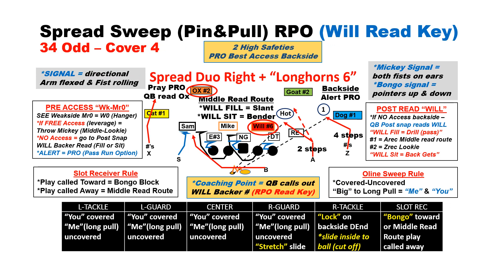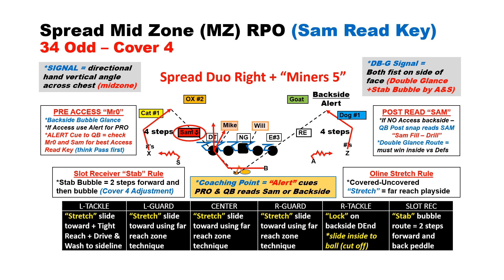Next, we can go pin and pull from a 34 defense. You can see the uncovered line — both guards get to be the pullers. The RPO routes and reads are exactly the same as outside zone. A great complement to outside zone and pin and pull sweep is what we call mid-zone RPO.